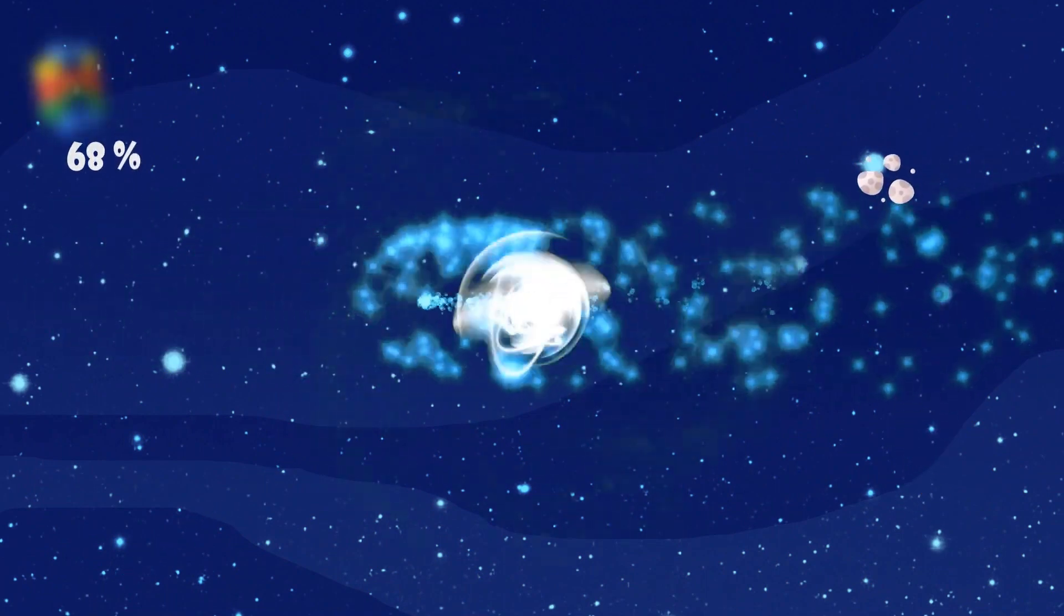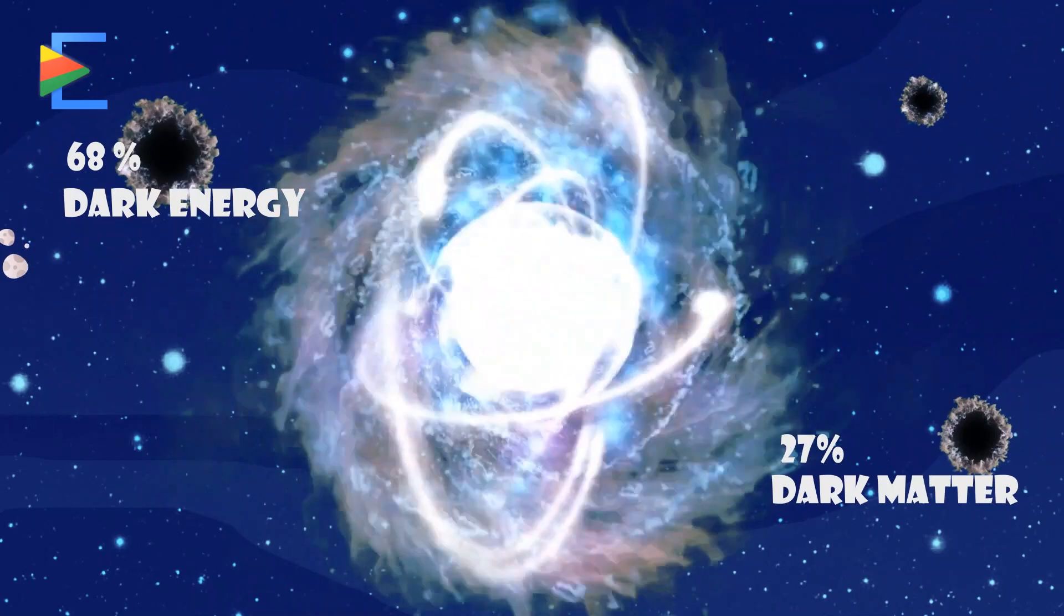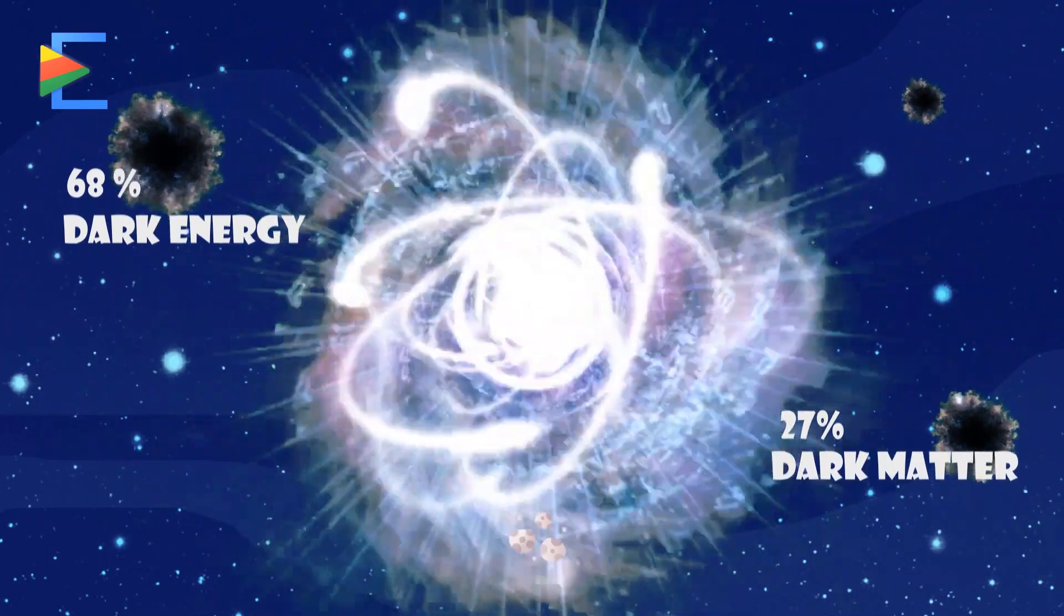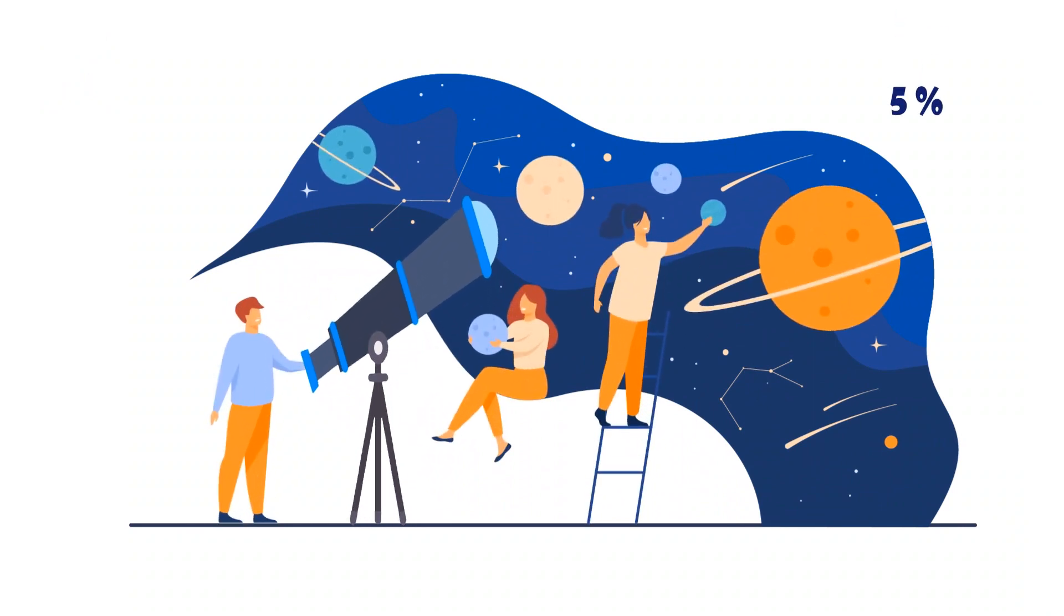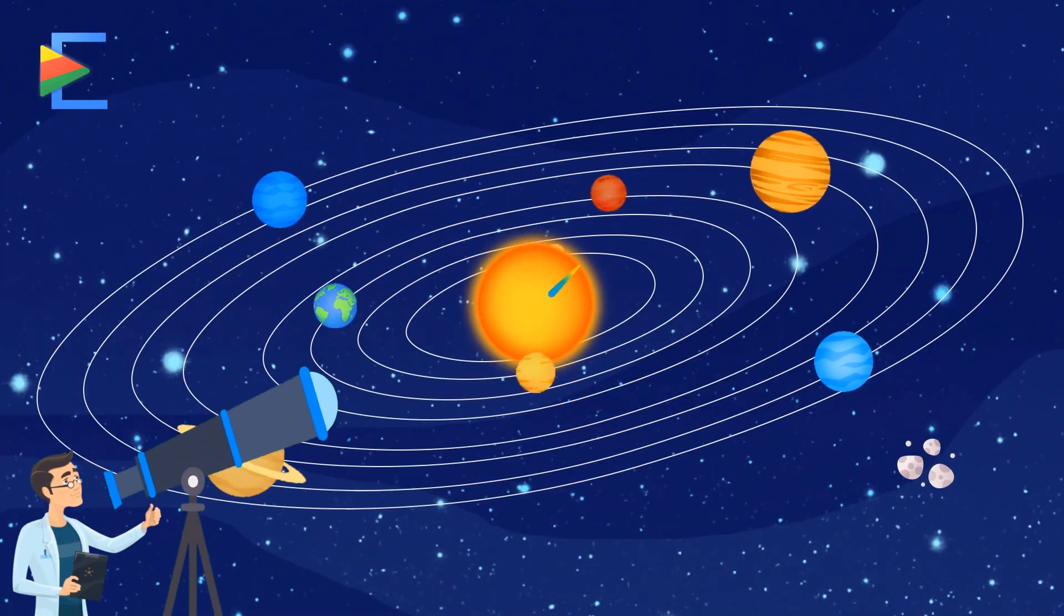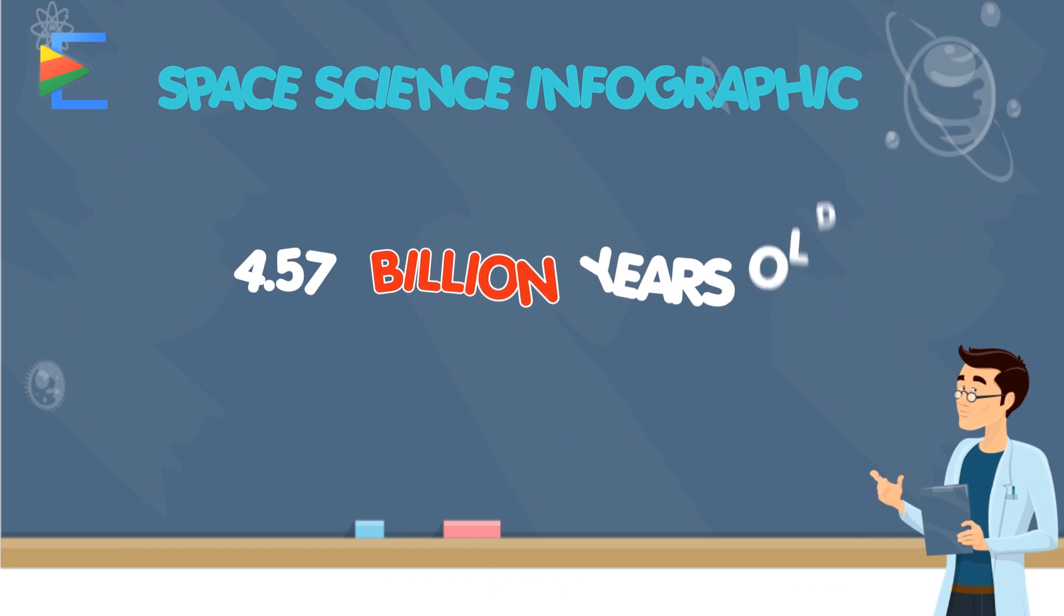68% of the universe is dark energy and 27% is dark matter. Both of these are invisible, even with a telescope, which means we are only able to see 5% of the universe. Scientists estimate that our solar system is 4.57 billion years old.